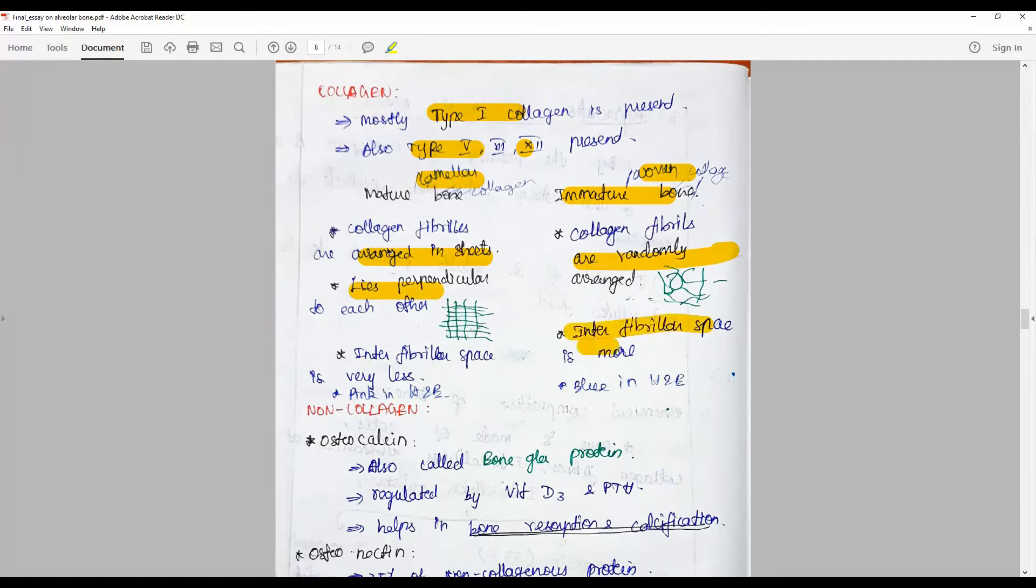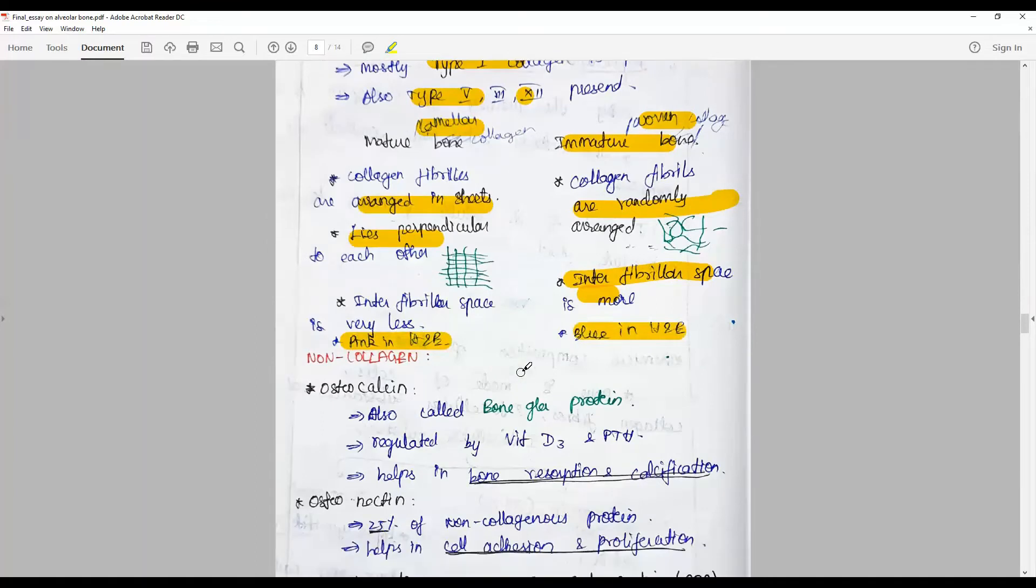Interfibrillar space is more. The difference between lamellar and woven bone: it is more pinkish in mature bone in H&E stains, whereas here it takes up a blue stain.